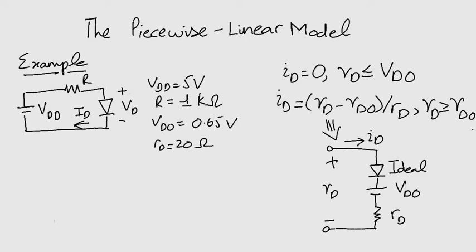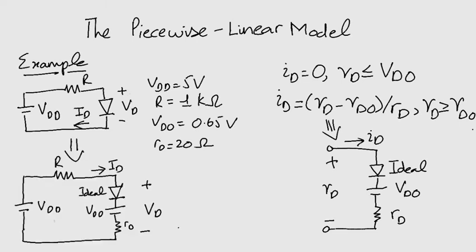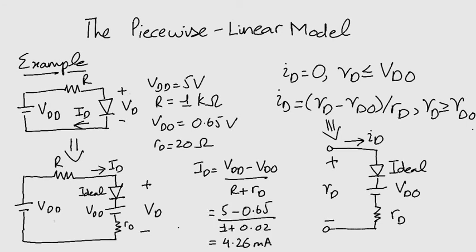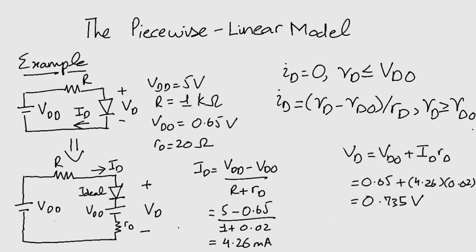Let's solve this. First, replace the diode with our equivalent circuit model. The current Id can be given by Vdd minus Vd0 divided by R plus Rd. This comes out to be 4.26 milliamperes. Vd, the diode voltage, is simply 0.735 volts. These are our answers. Easy, isn't it?